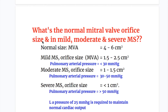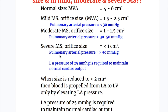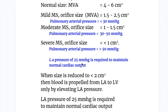The normal mitral valve orifice size is 4 to 6 cm². In mild mitral stenosis, it is 1.5 to 2.5 cm², with pulmonary pressure less than 30 mmHg. In moderate mitral stenosis, orifice size is 1 to 1.5 cm², and pulmonary pressure is 30 to 50 mmHg. In severe mitral stenosis, the MVA is less than 1 cm², and pulmonary arterial pressure is more than 50 mmHg. A left atrial pressure of 25 mmHg is required to maintain normal cardiac output in severe MS.